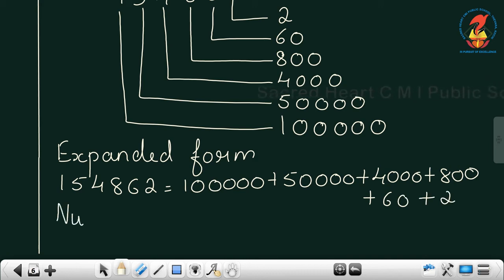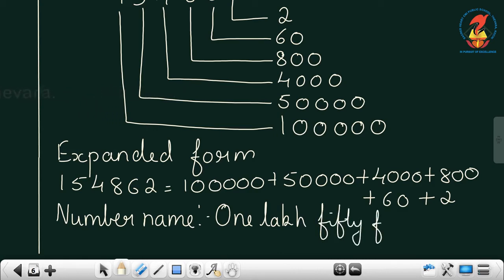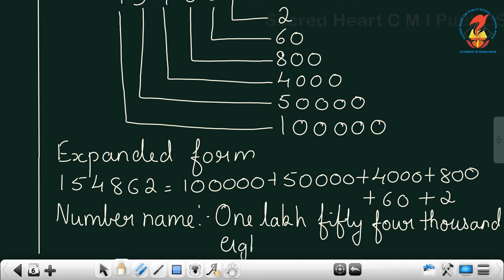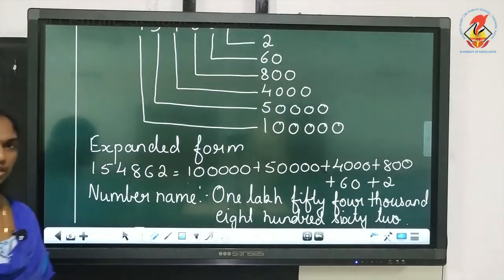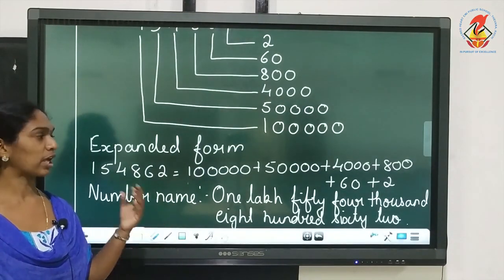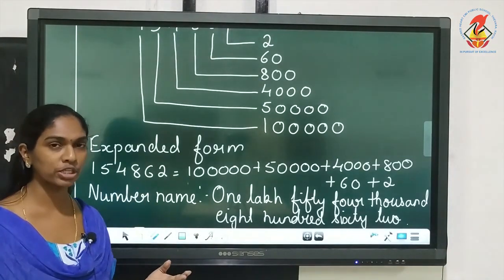What will be the number name? Starting with the lakhs period, you have 1 in the lakhs place, so write 'One lakh'. Then in the thousands period you have 54, so 54,000. Then you have 862 in the ones period. So the number name is One lakh fifty-four thousand eight hundred sixty-two.